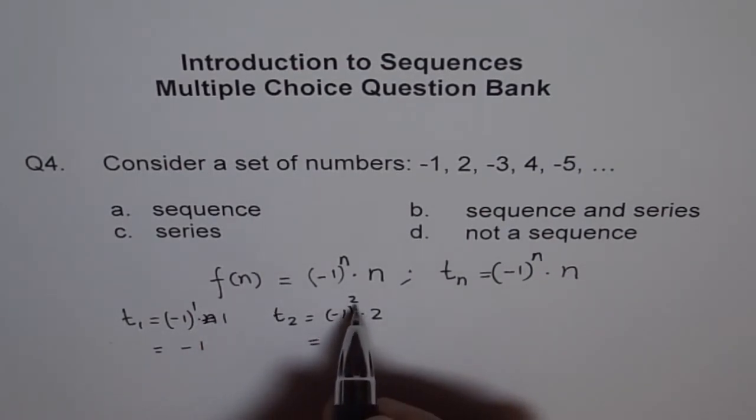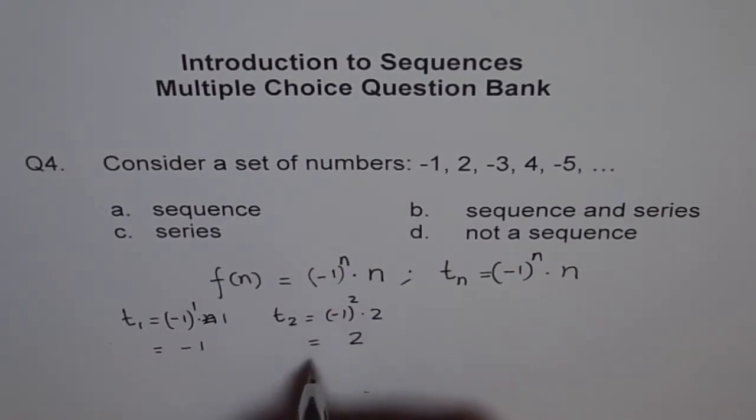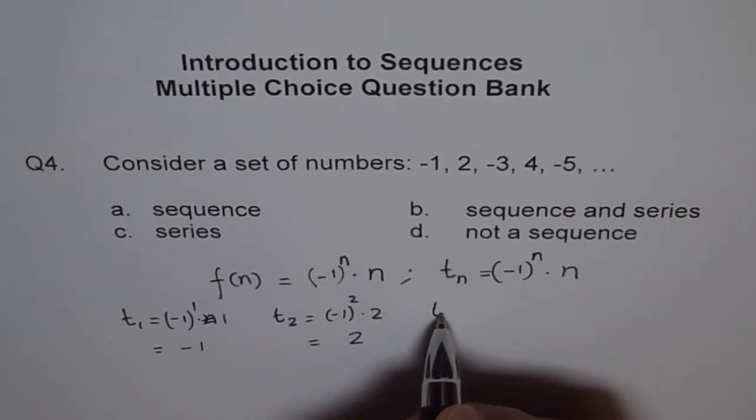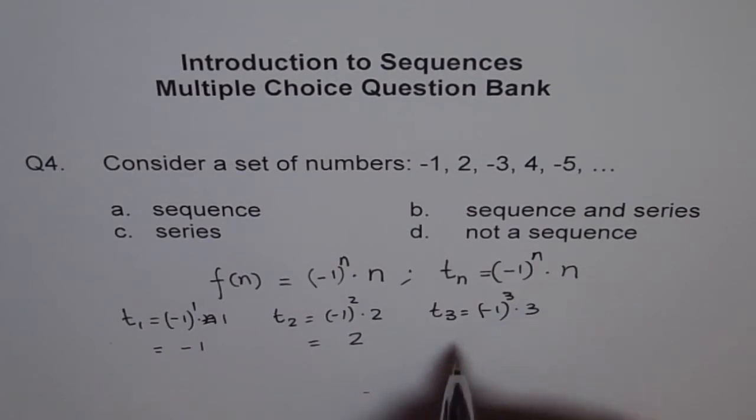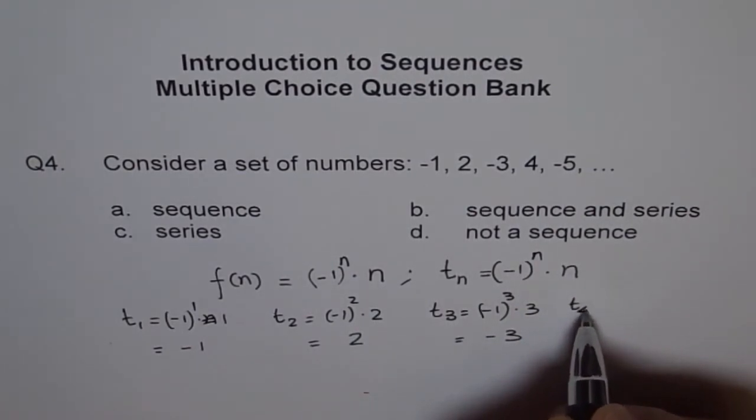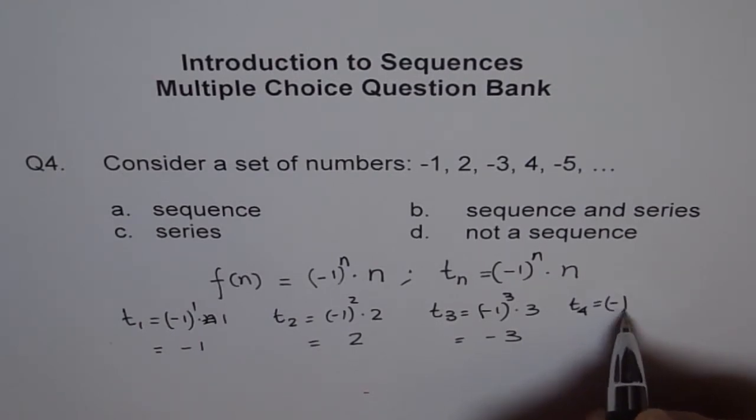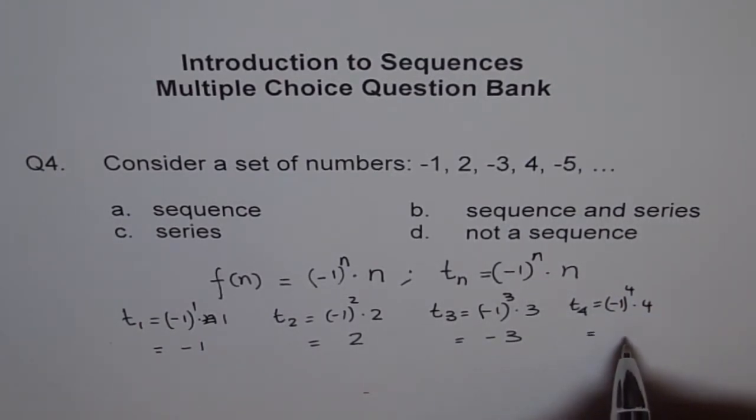So this equals to (-1)^2, which is positive, so I get 2 here. No need to write positive for me. t₃ equals to (-1)^3 times 3, which is -3. And t₄ equals to (-1)^4 times 4, which equals to +4. You see?